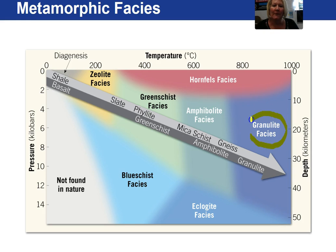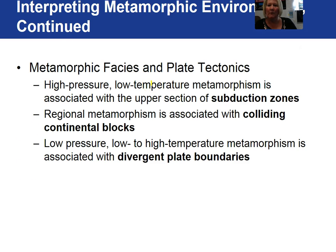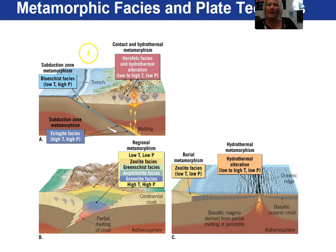A granulite facies represents a very high temperature, moderate to high pressure environment. Blue schist facies would be in the subduction zone area where pressures are very high. Eclogites are found at the highest grade of metamorphism in a subduction zone where both temperatures and pressures are very great. High pressure, low temperature metamorphism is associated with the upper part of a subduction zone, whereas regional metamorphism is associated with colliding continental blocks. Low pressure, low-to-high temperature metamorphism is associated with divergent plate boundaries.